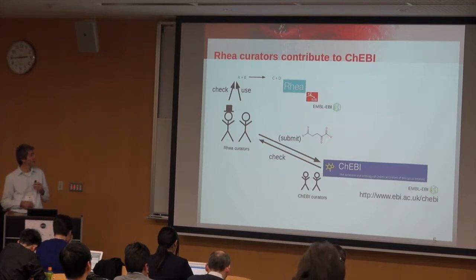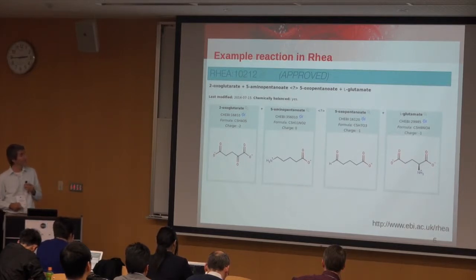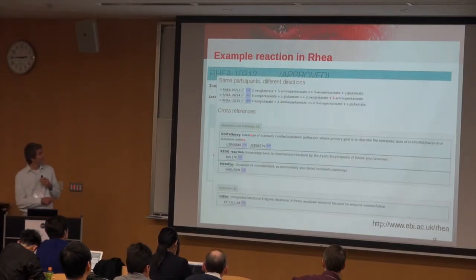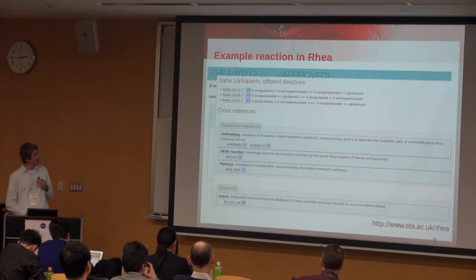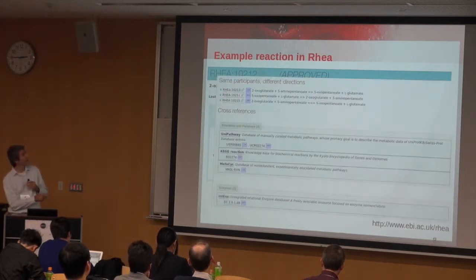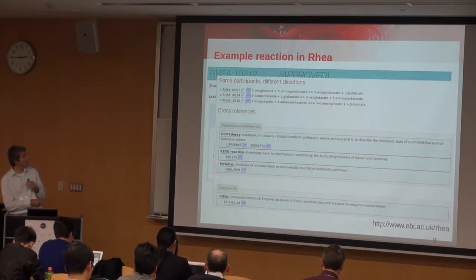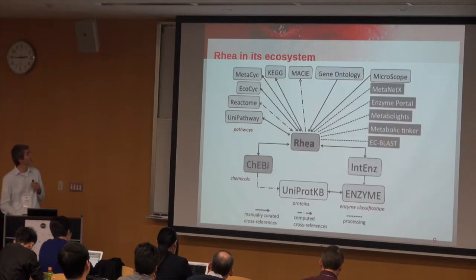Each reaction has been controlled by at least two Rhea curators. This is the basic output of the curation work. Each participant is assigned a ChEBI ID, and the Rhea curators also manually curate the links to external databases. Each reaction is defined in a so-called master reaction where the direction is not defined. We then automatically assign IDs to the different reaction directions: left to right, right to left, and bidirectional. We add manually curated cross-references to the different directions — for example UniPathway, KEGG reactions, MetaCyc — and for the catalyst we link to the EC number using the IntEnz database.